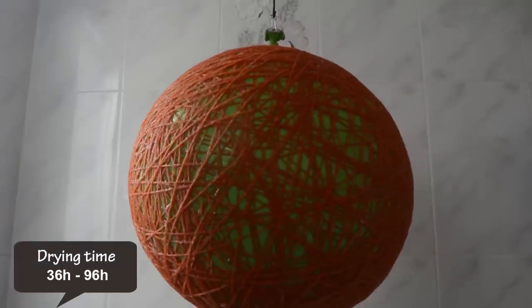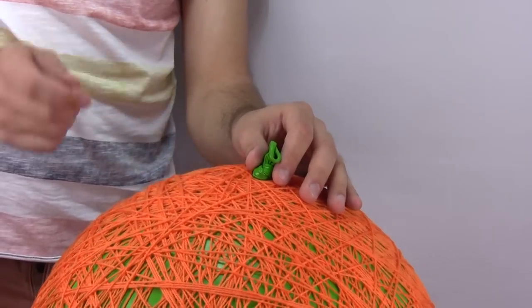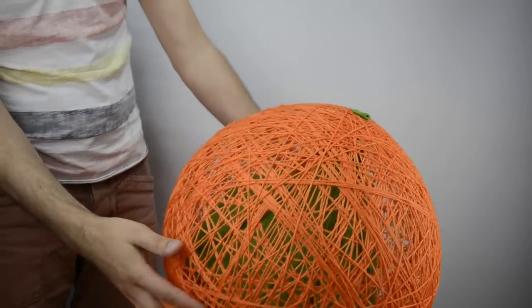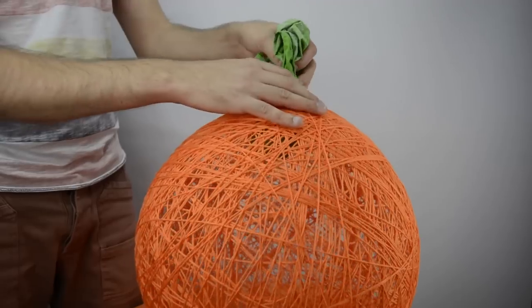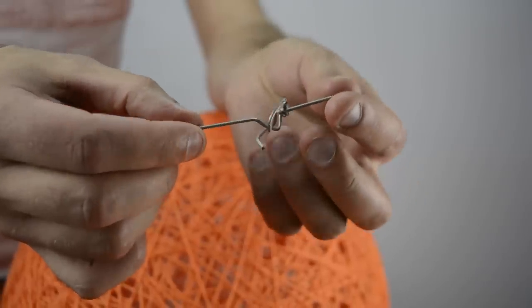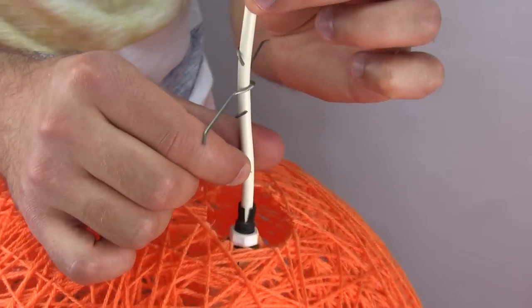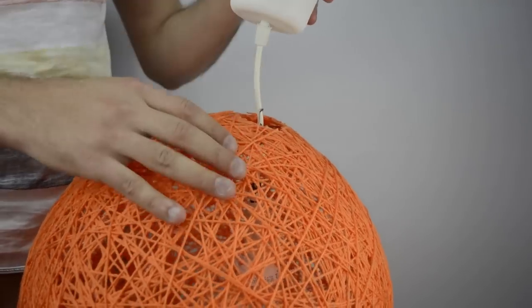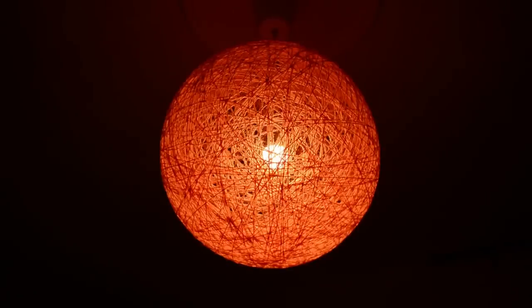Now hang it somewhere to dry. When it's dry, pop the balloon and cut the hole to take it out. I made this little hook to hang the lampshade. Well that's it! Enjoy your fancy yarn lampshade.